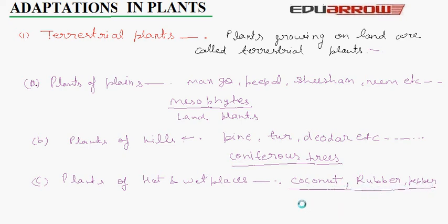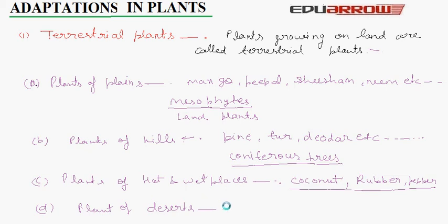Plants of deserts: in deserts, there is scarcity of water, so plants adapt themselves to get whatever little water is available, or survive without water for many days. The leaves of desert plants are reduced into spiny thorns. This helps the plants to check water loss from the plant's body. The process of food making in these plants takes place in the stem. Desert plants like cactus and date palm have thorns instead of leaves.